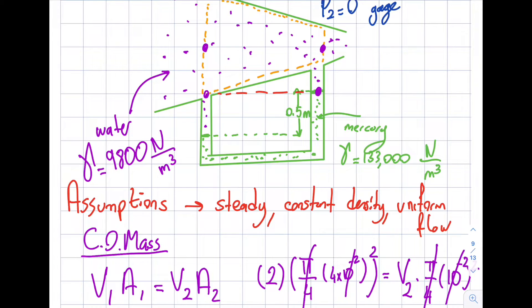So anyways, going down, I'm going to increase the pressure by specific weight of the mercury times 0.5, and then the pressure here. When I go up in this purple color, it's going to be 9,800 times this height, which is 0.5 as well. So let me just write what I said.